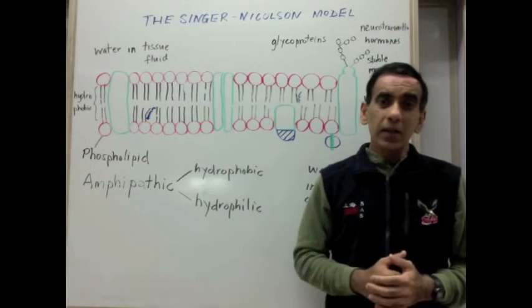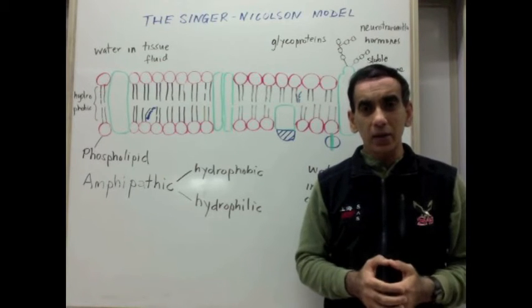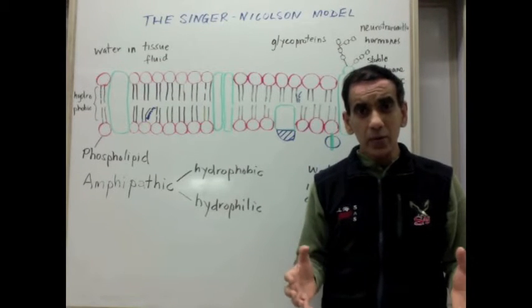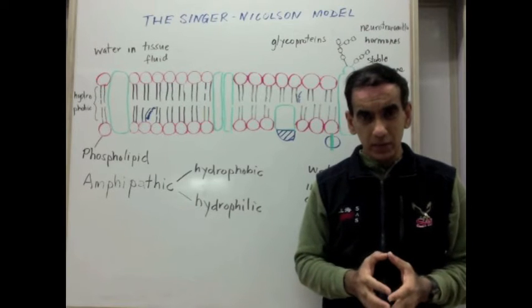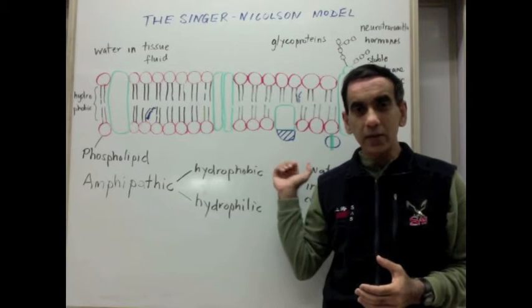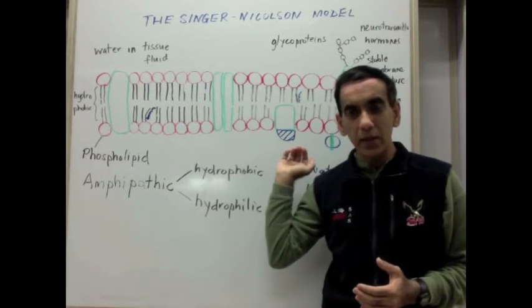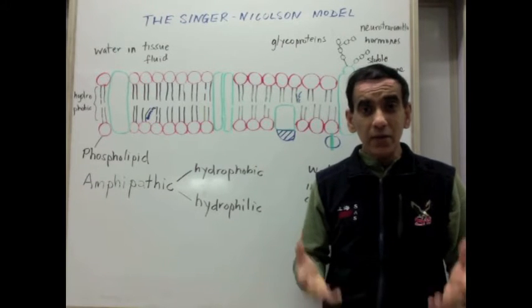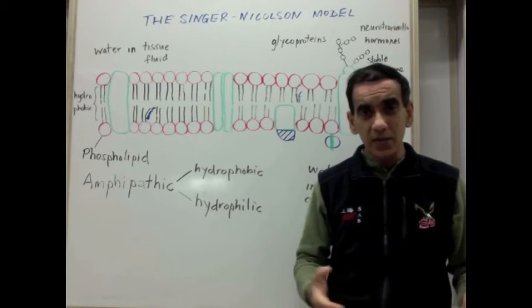Behind me is a diagram to represent the Singer-Nicolson model of the cell membrane, also known as the fluid mosaic model of the cell membrane. Today we look at each of the components of the cell membrane and examine how they function in regulating the entry and exit of substances.